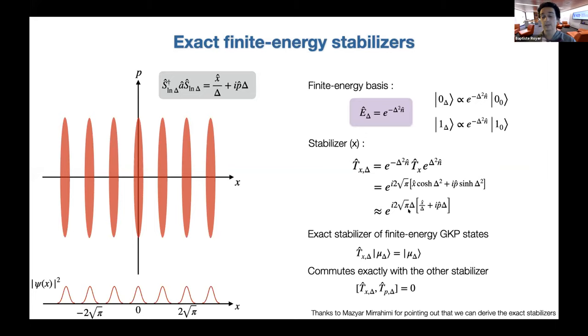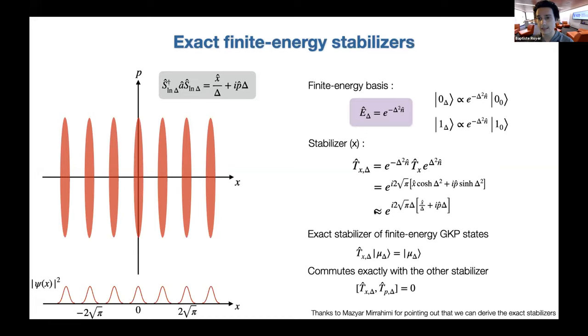Now equipped with this finite-energy stabilizer, we want to perform error correction. This is a strange operator — neither unitary nor Hermitian — it has both a real and imaginary part. Instead of measuring and then correcting, the approach we take is a dissipation-engineering-based approach built on that operator.